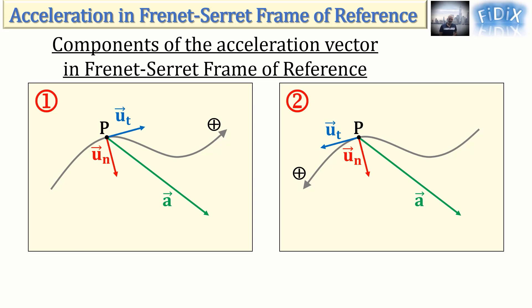To represent the vector components of the acceleration vector, we start by drawing two straight lines: the first one being the line of action of vector u_t, and the second one passing through the head of vector a and being parallel to u_t.